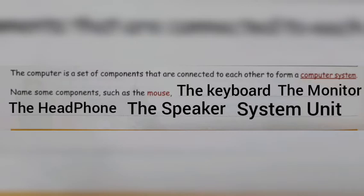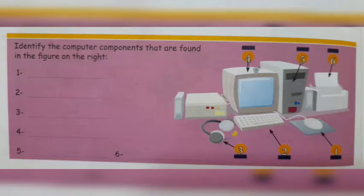Let's go to another picture of a computer. Can you see one of the pictures of a computer here? Identify the computer components that are found in the figure on the right. So everybody can see the picture of a computer here. Number one — what is it? Yes, the mouse.